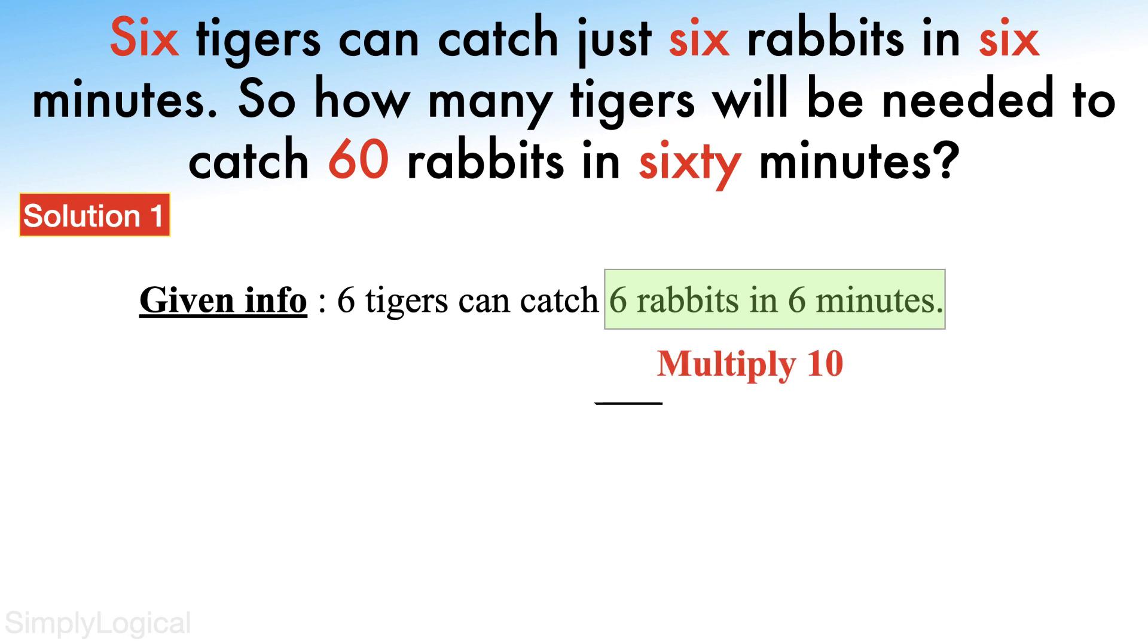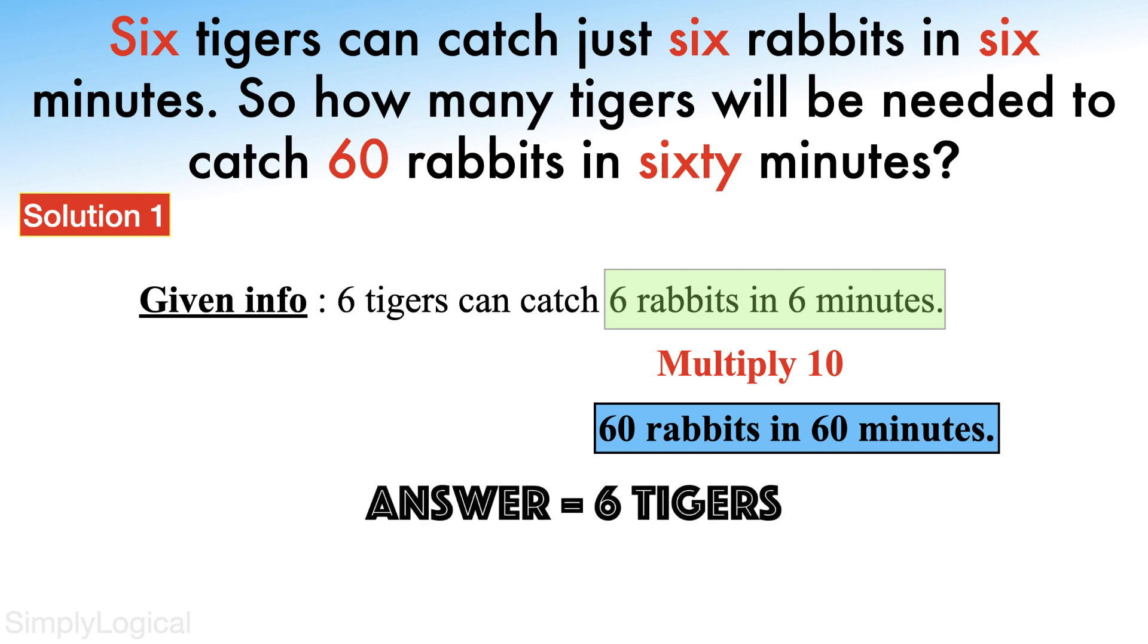the same tigers can catch 60 rabbits in 60 minutes. So the answer will be six. These are the logical ways of looking into the problem and this is a good way to solve the problem.